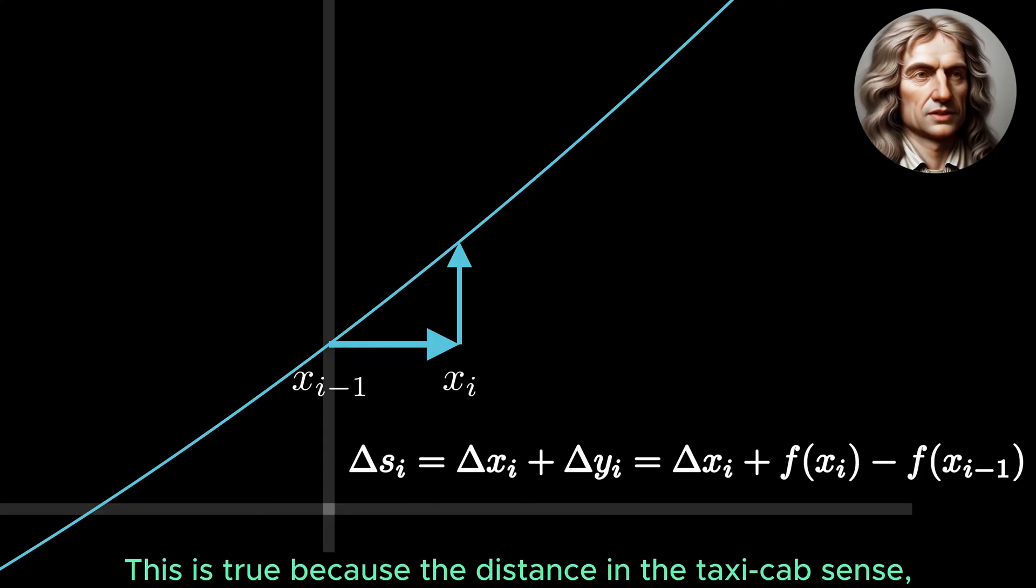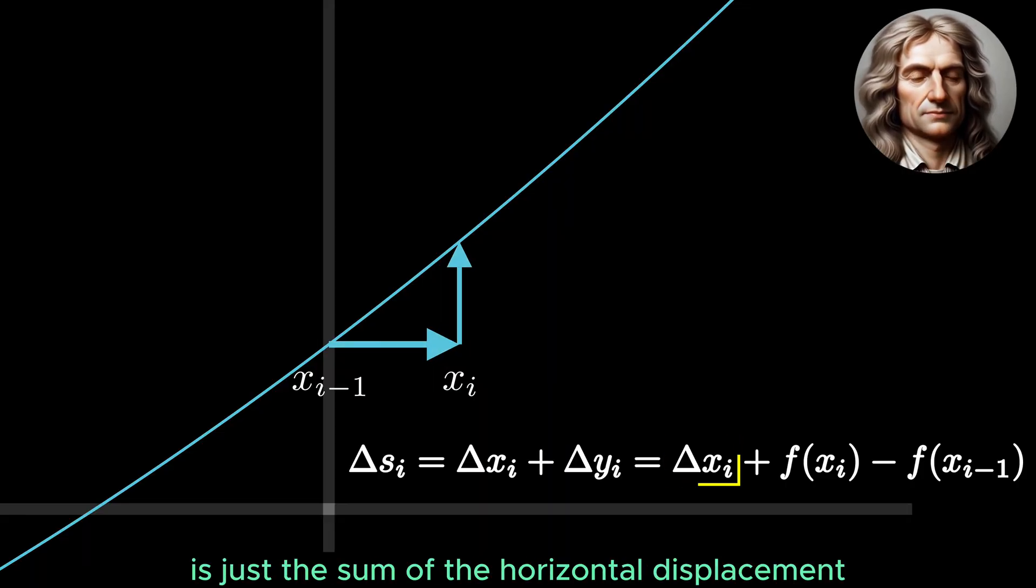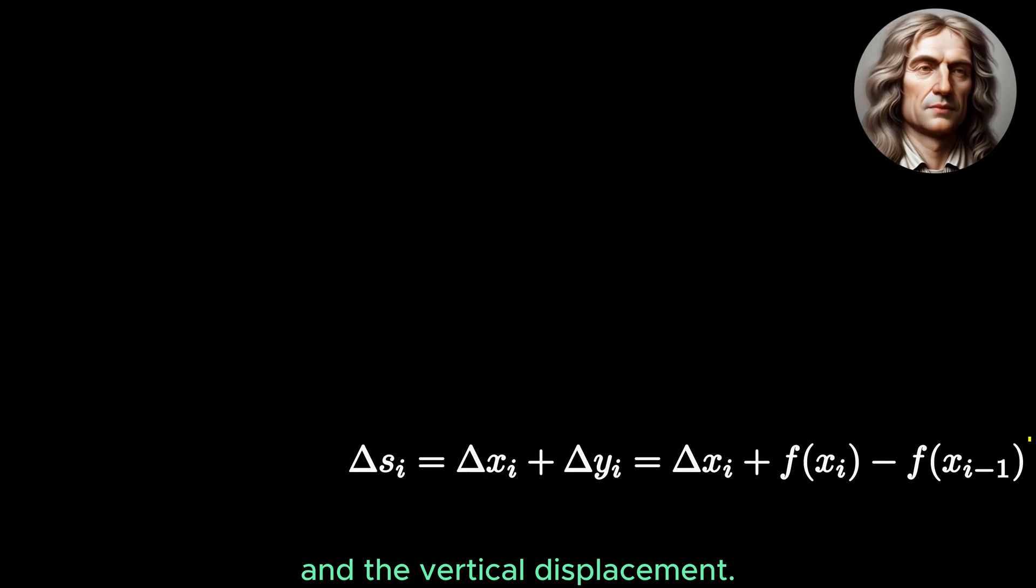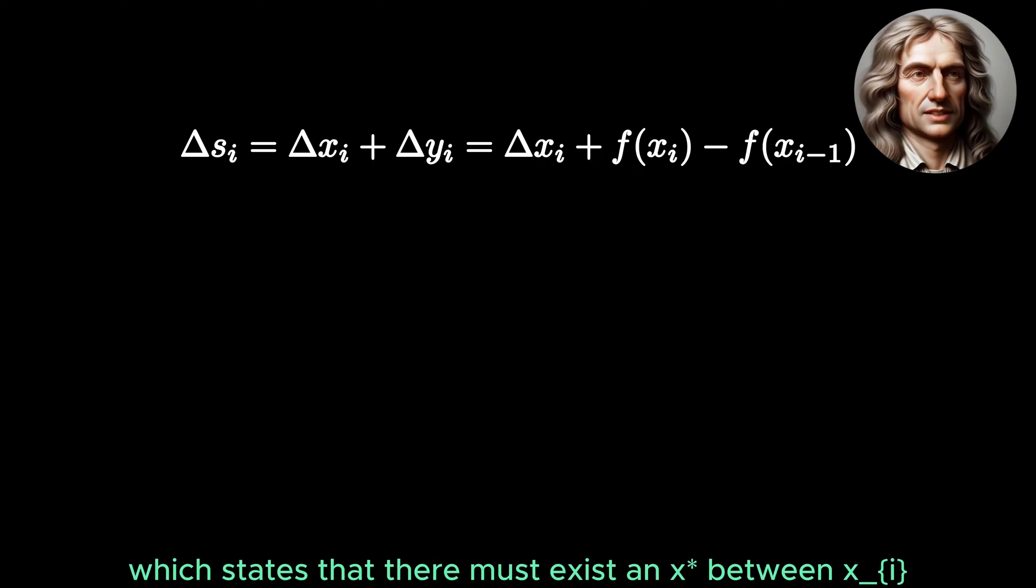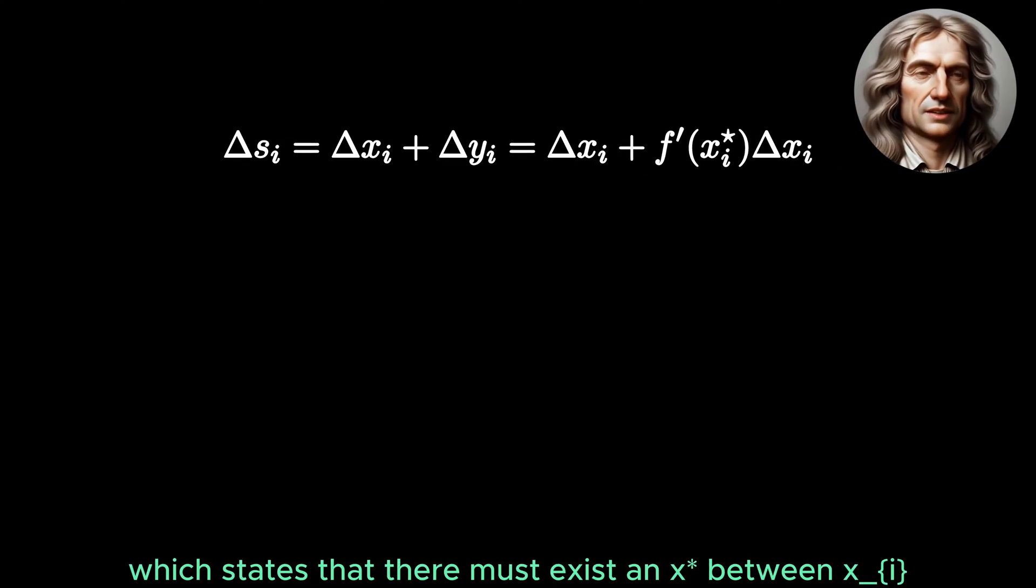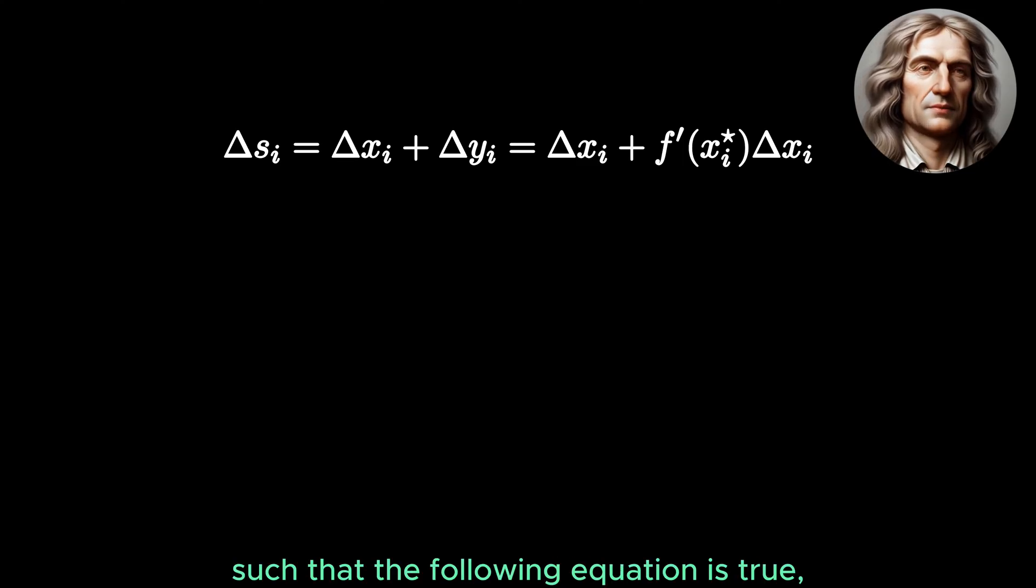This is true because the distance in the taxicab sense, as mentioned by Mr. Galileo earlier, is just the sum of the horizontal displacement and the vertical displacement. Next, according to the mean value theorem, which states that there must exist an x-star between xi and x(i-1), such that the following equation is true.